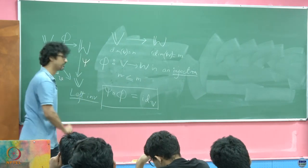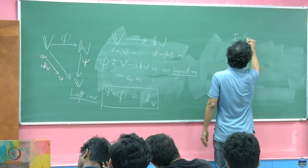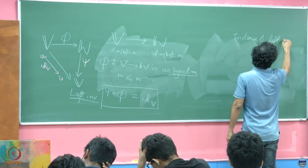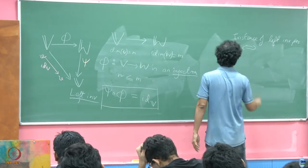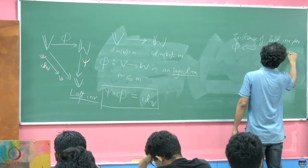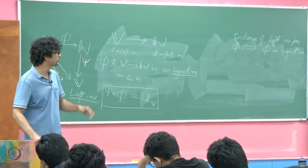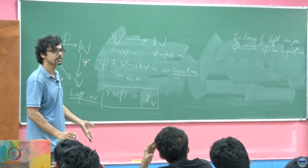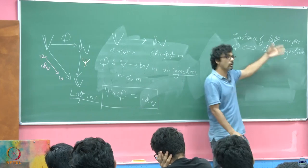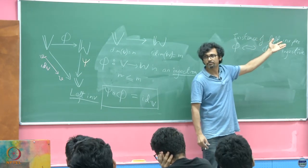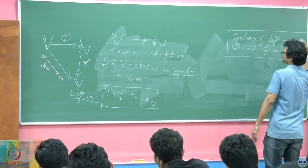The existence of a left inverse for phi is equivalent to phi being injective. We have to show both sides, because this is an if-and-only-if condition — a necessary and sufficient condition. Whenever you have a left inverse, phi must have been injective to start with. Whenever you start with an injective phi, you will always be able to cook up a left inverse.